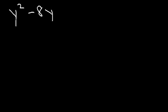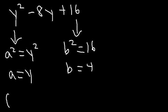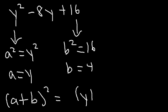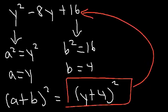Let's try another example: y² - 8y + 16. This is another perfect square trinomial. Here a² = y² so a = y, and b² = 16 so b = 4. Using the form (a - b)², the answer is (y - 4)².